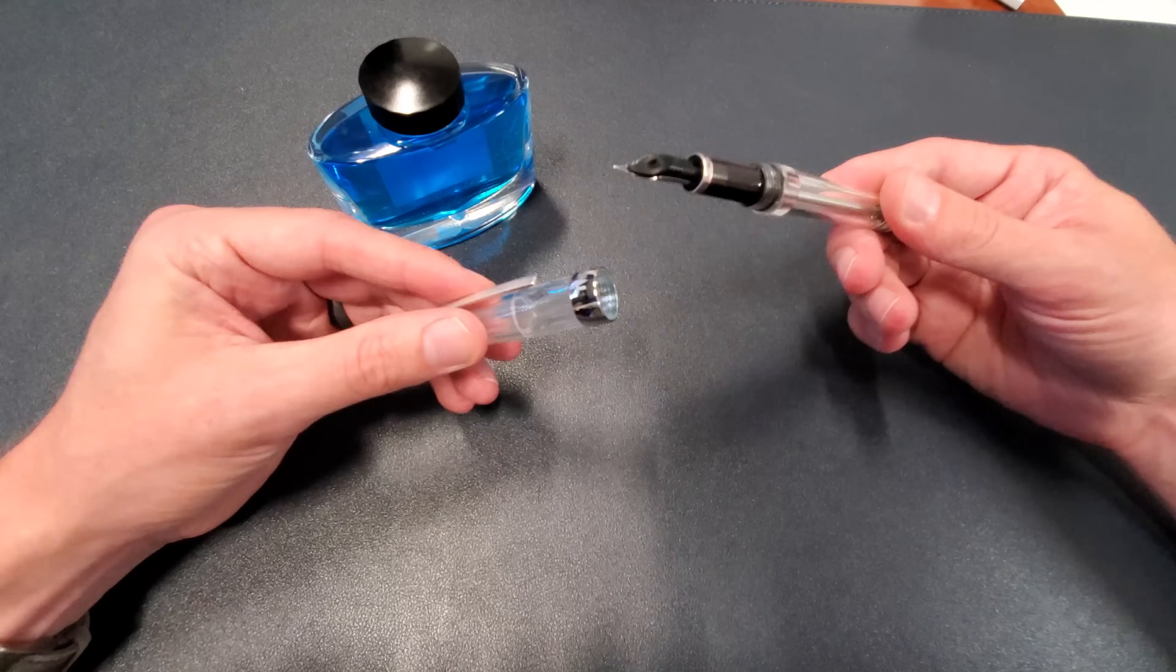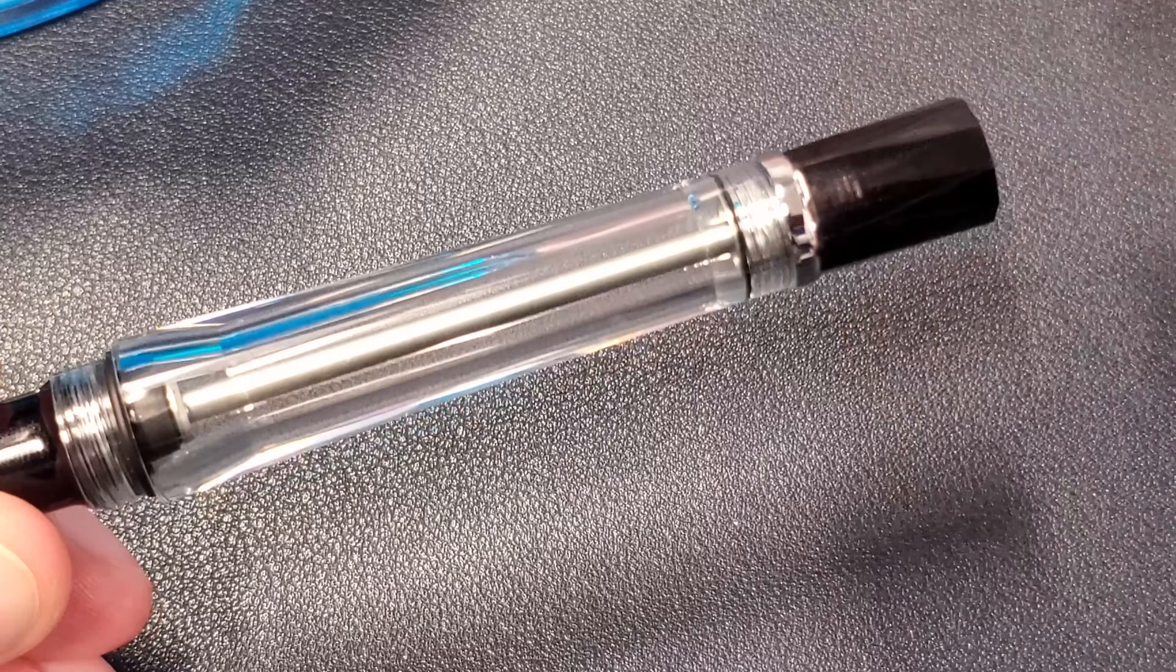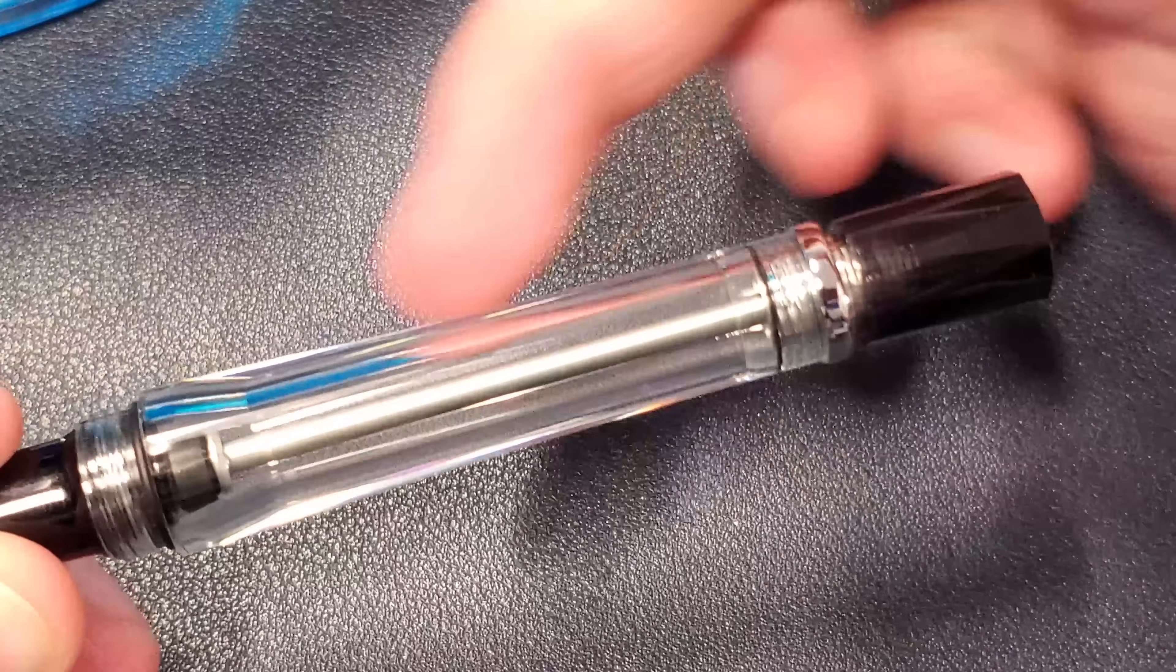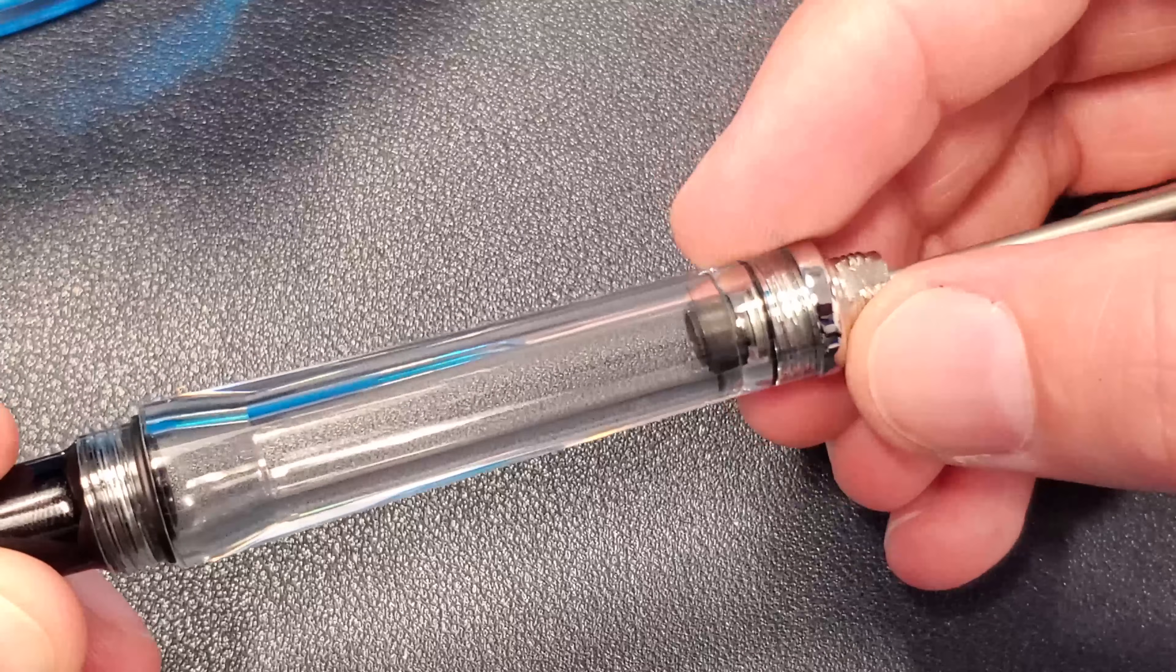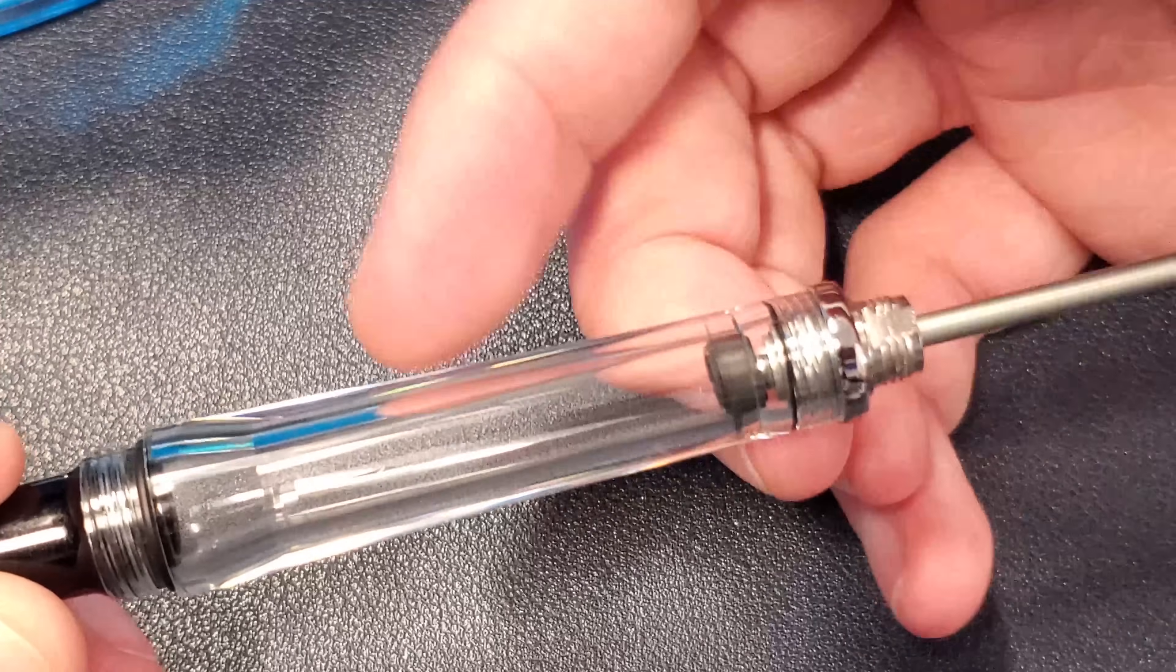So what's a vac filler? Simply put, it is a fountain pen filling mechanism. It consists of a knob that you unscrew, a rod that you pull up, and attached to the rod is a rubber gasket that is sealed tight against the inner walls here.